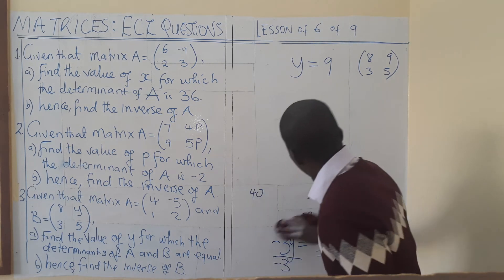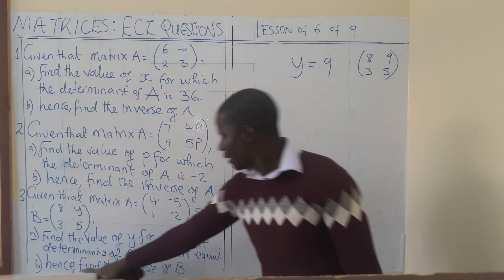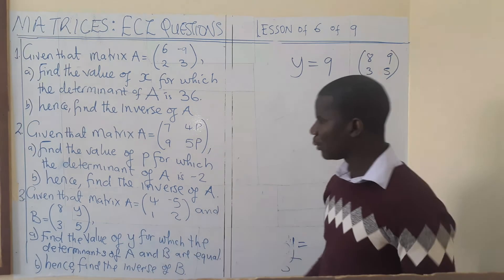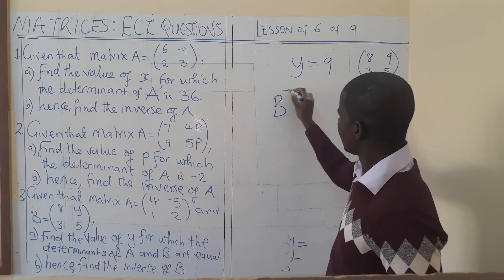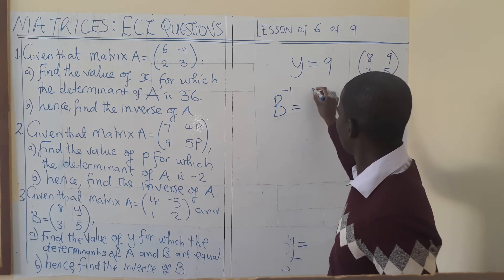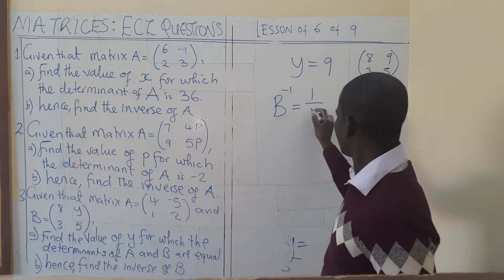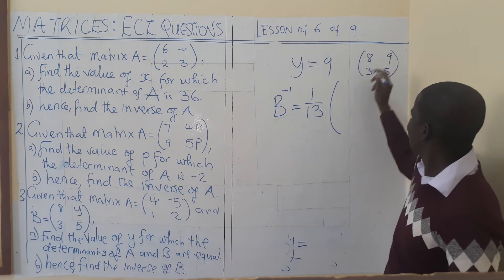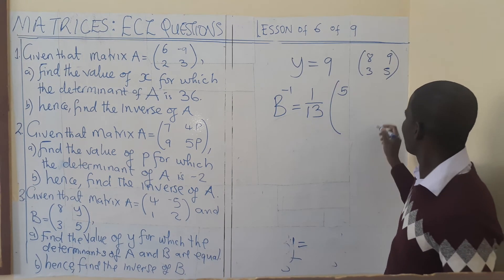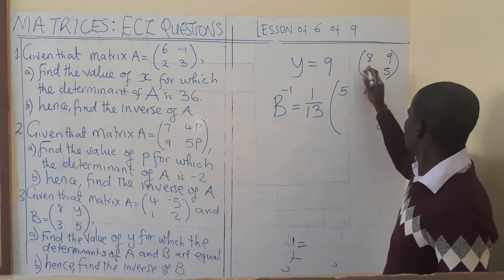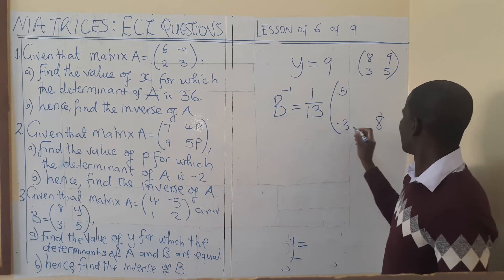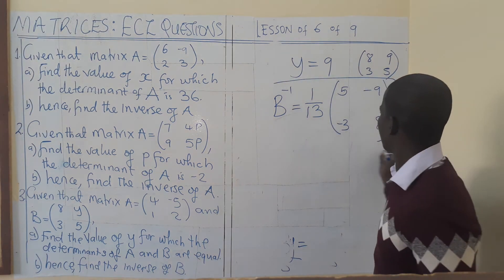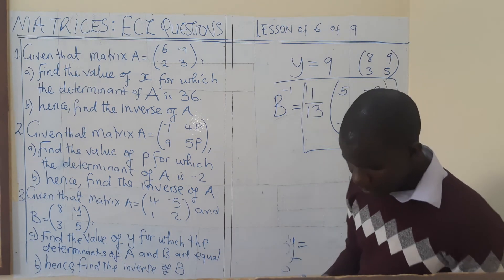Next we write the inverse of B. The inverse of B is 1 over the determinant, which is 13, multiplied by the adjoint. The major diagonal elements swap positions: 5 and 8 exchange. The minor diagonal elements change their signs, giving negative 3 and negative 9. This is the inverse of B.